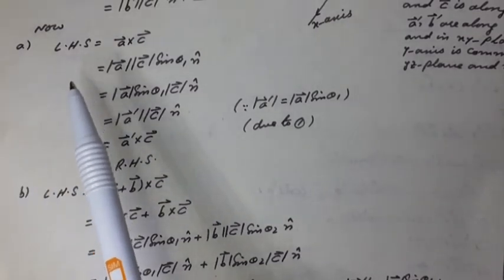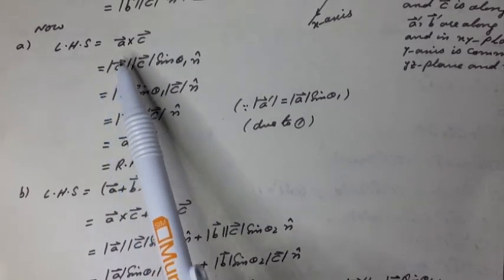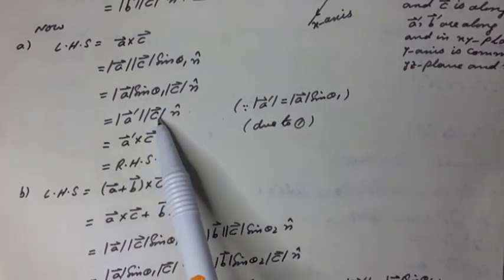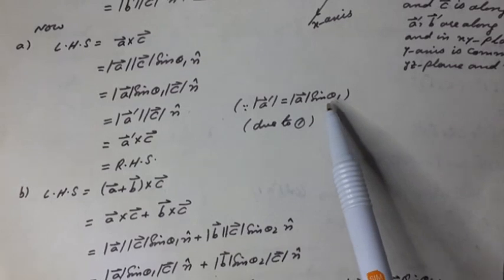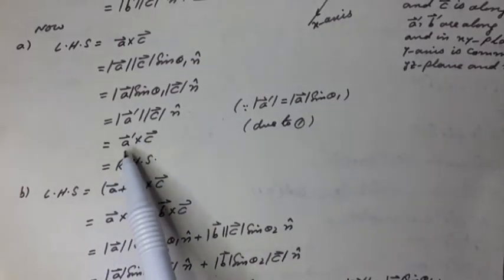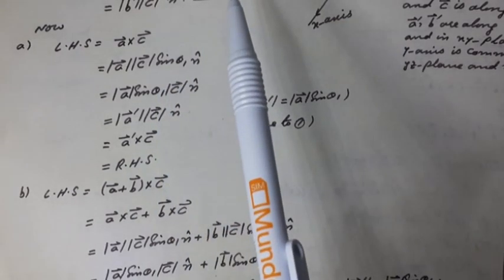Now for the left-hand side: a vector cross c vector equals, by the definition of the vector cross product, a vector magnitude times c vector magnitude times sin θ₁ times n-hat. It can be written as a vector magnitude times sin θ₁ times c vector magnitude times n-hat. As clear from the figure, a-dash vector magnitude equals a vector magnitude times sin θ₁, so this equals a-dash vector magnitude times c vector magnitude times n-hat, which equals a-dash vector cross c vector due to Equation 1 above. This equals the right-hand side.